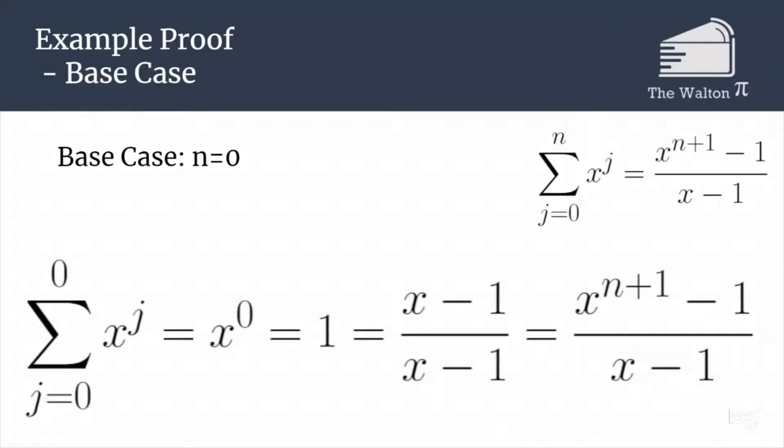The sum from j equals 0 to 0 of x to the j is just the term x to the 0, which equals 1. This tells us that x minus 1 divided by x minus 1 is also equal to 1, and x is the same as x to the 0 plus 1, or in this case, x to the n plus 1. So the base case of n equals 0 holds.